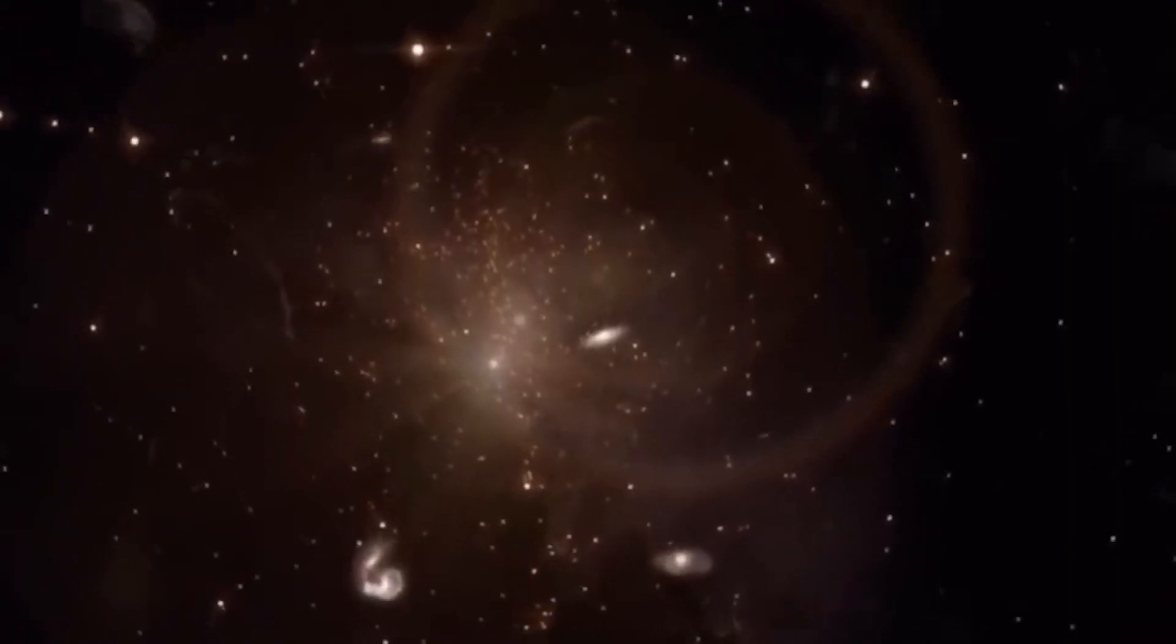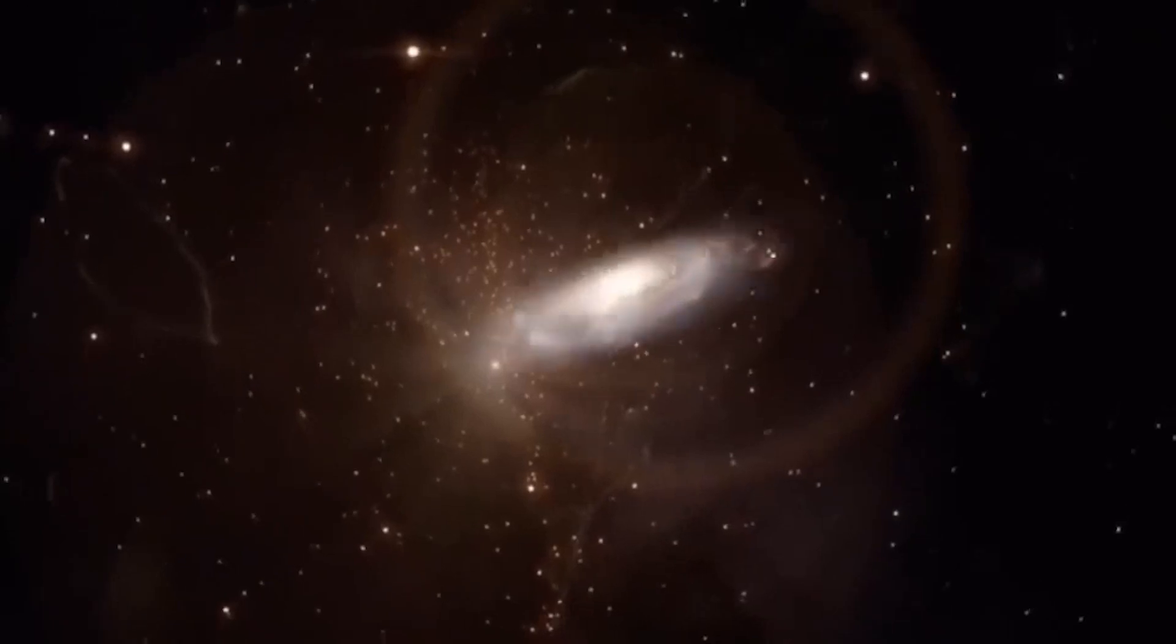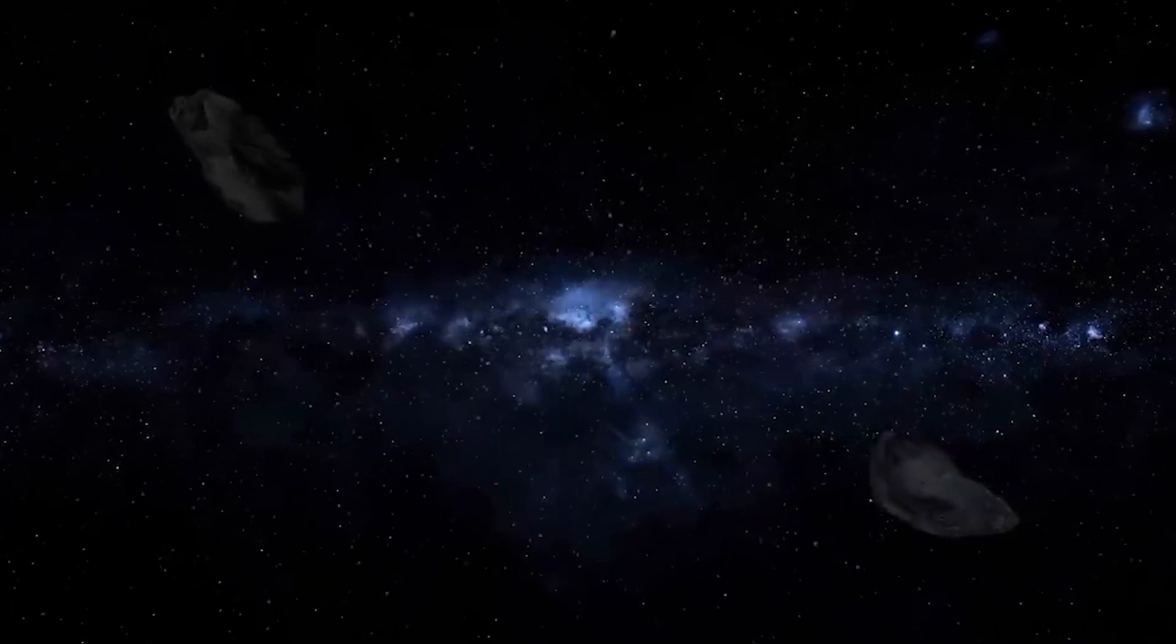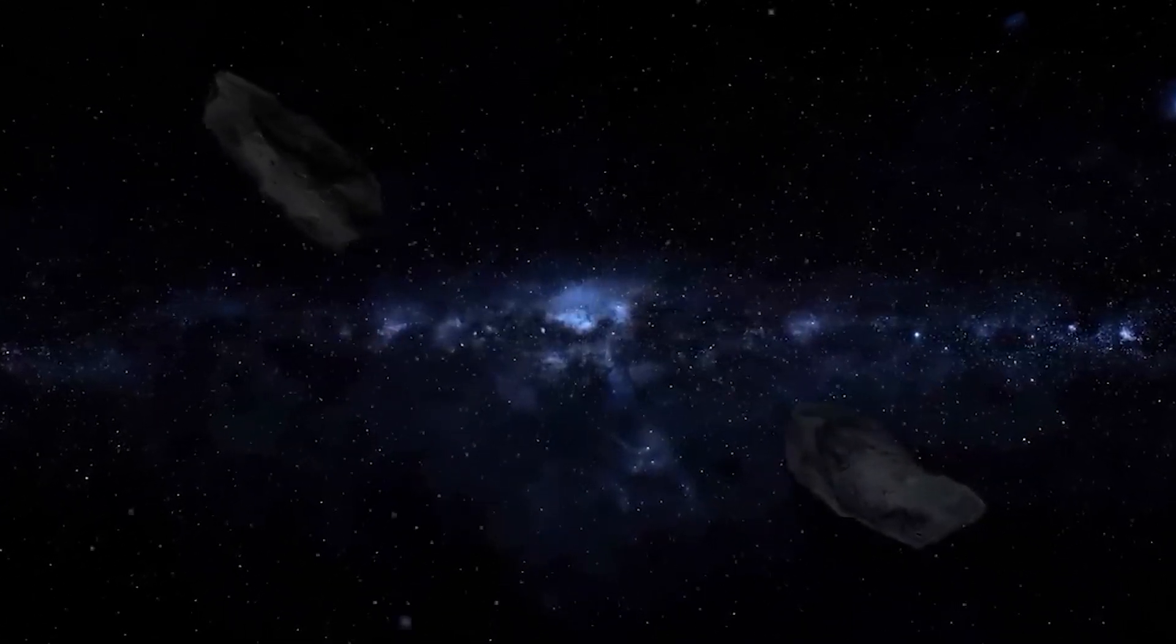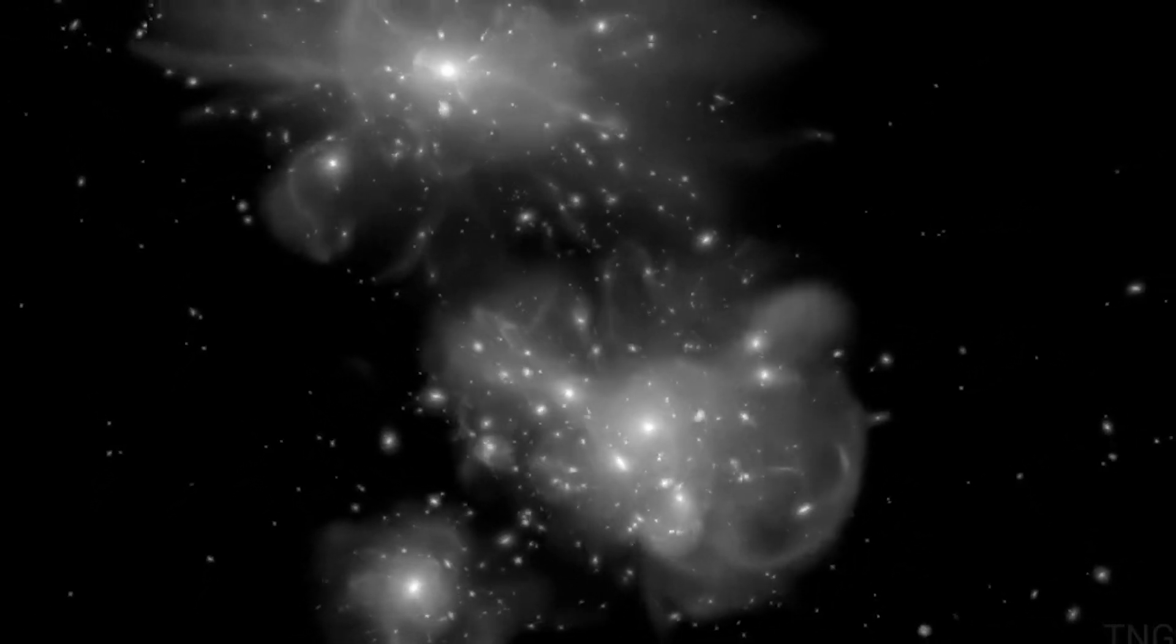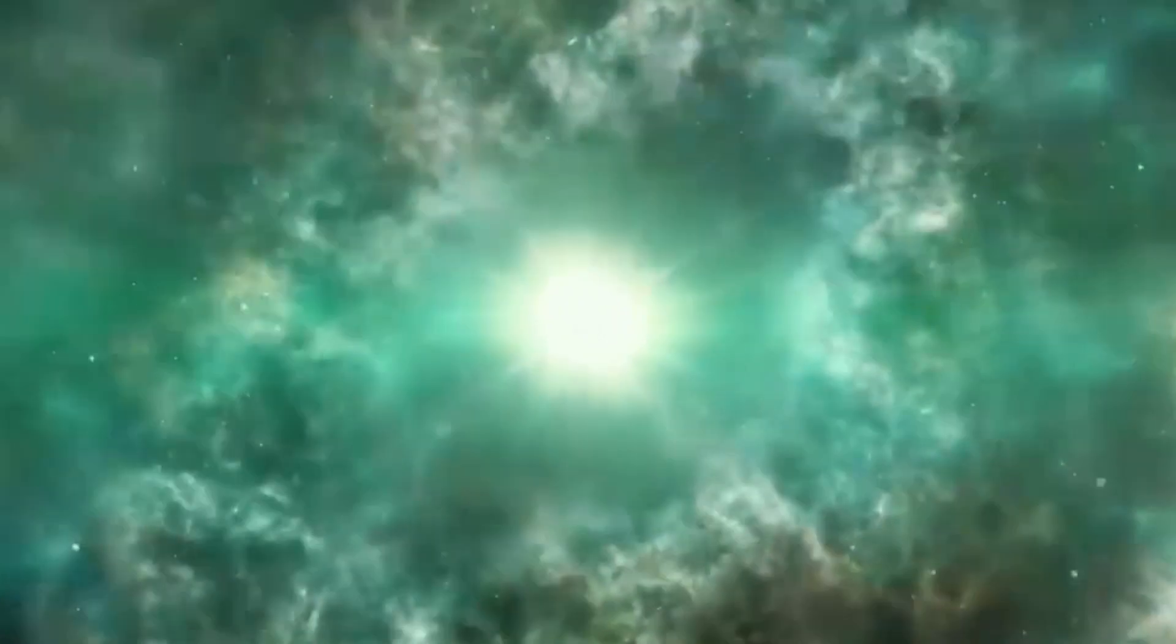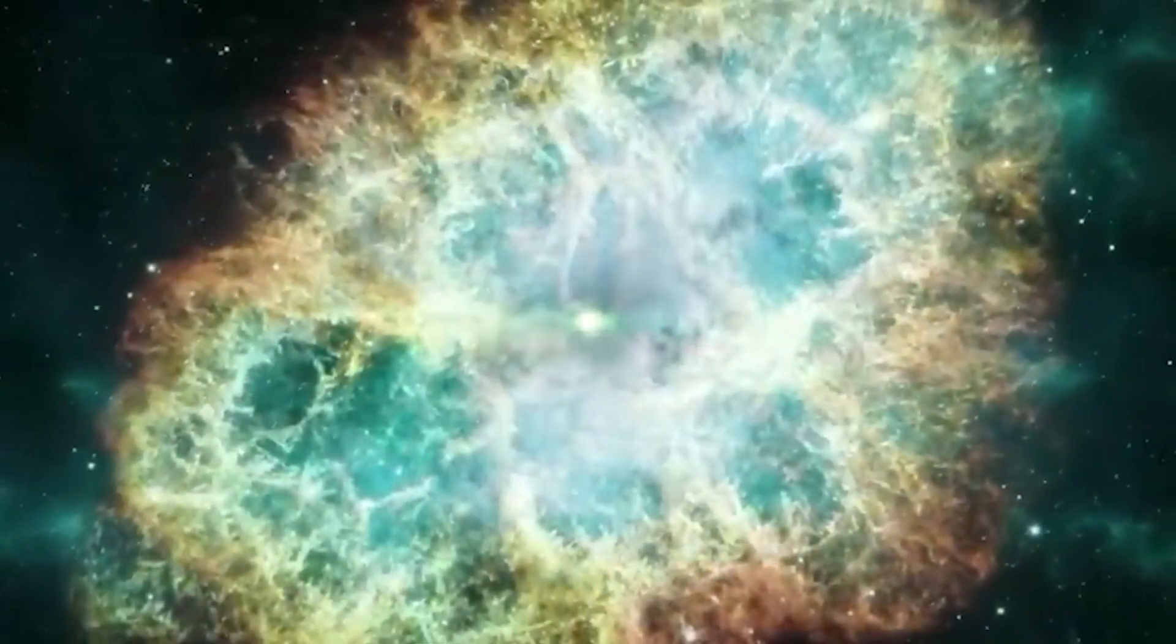The expanding cloud of gas and dust that supernovas create when they burst can take on a variety of shapes and colors depending on the type of supernova and the environment it is in, making supernovas extremely spectacular. This is so that astronomers may use supernovas as reference candles to estimate distances because they have a constant peak brightness.